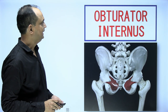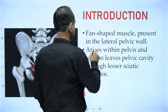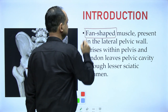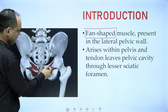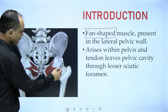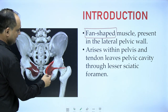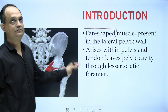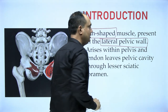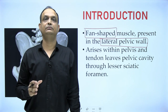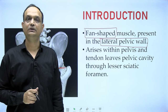When talking about the obturator internus, it is a fan-shaped muscle. You can see in this diagram that it is broad at its origin and becomes narrow when it goes posteriorly towards insertion. This fan-shaped muscle is present in the lateral pelvic wall — an important exam question about which muscles are present in the lateral wall of the pelvis.